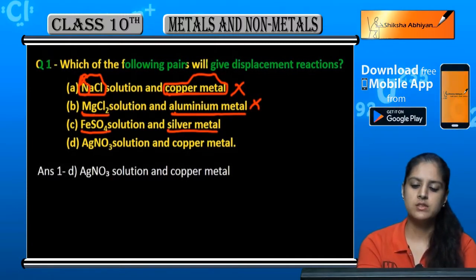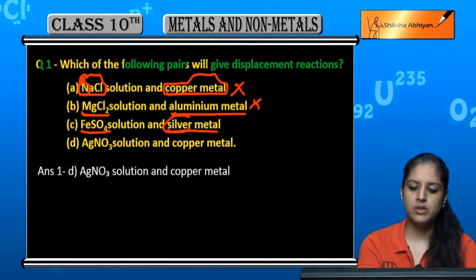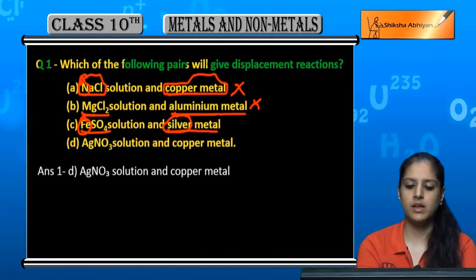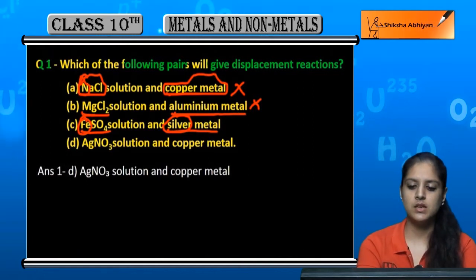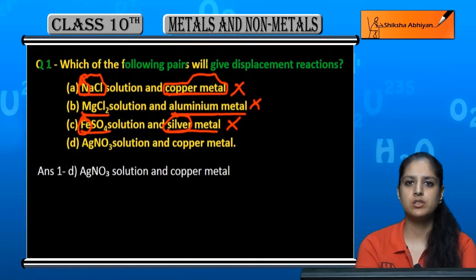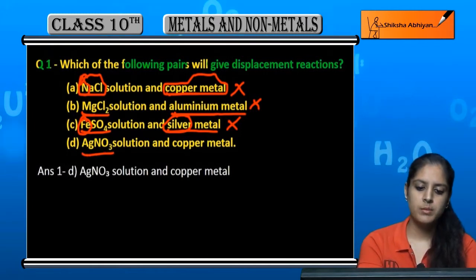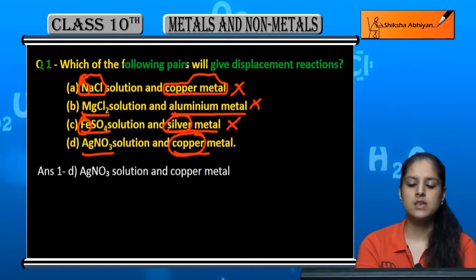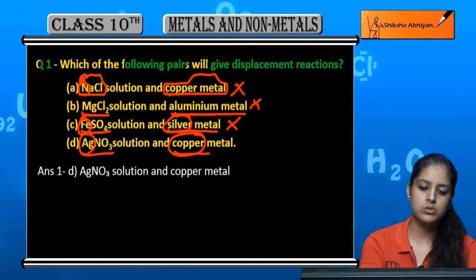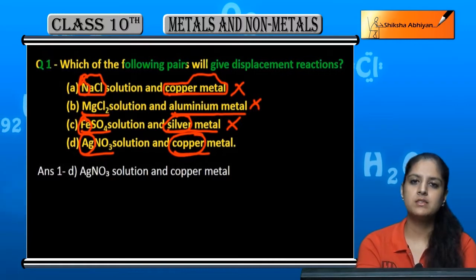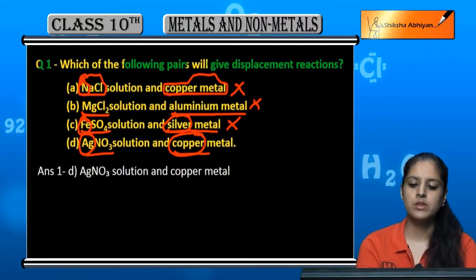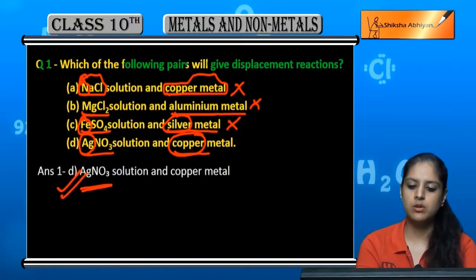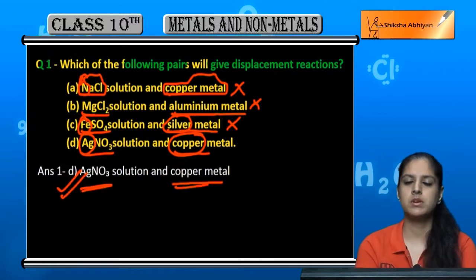Iron Sulfate and Silver metal — Silver is less reactive and Iron is a more reactive metal, so Silver cannot displace Iron. This will not be a displacement reaction. Now, Silver Nitrate (AgNO₃) solution and copper metal — copper is more reactive than silver, so copper will displace silver from AgNO₃. This is the correct option; displacement reaction will occur.